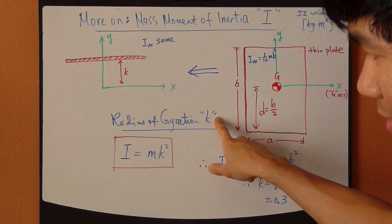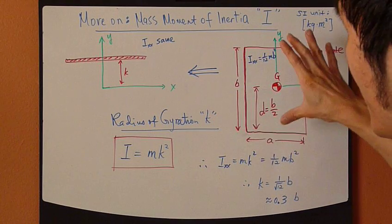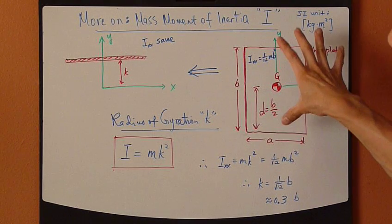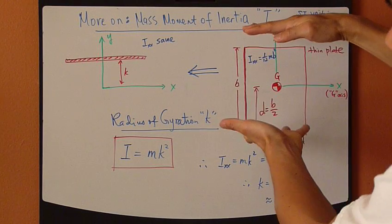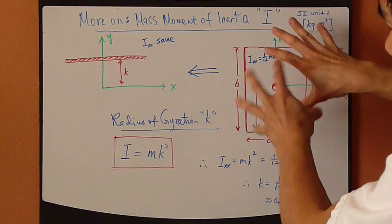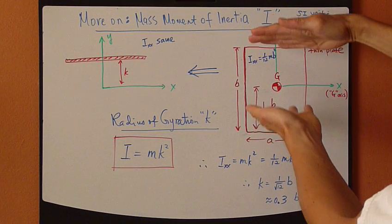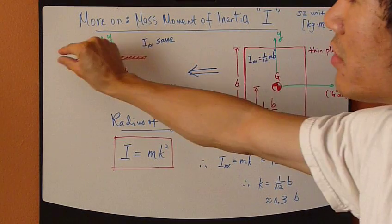And what it means is that you take a shape, let's say this thin plate, and we condense it down. You squeeze it, this whole mass and this size and shape, squeeze it down into one little single strip.